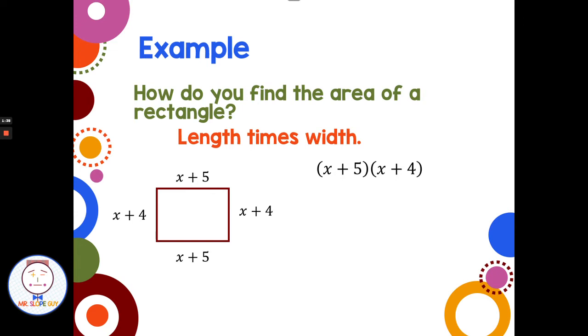Multiplying using FOIL, this method is only for multiplication of a binomial times a binomial. It is not for add, not for subtract. It's only for multiplying a binomial times a binomial.